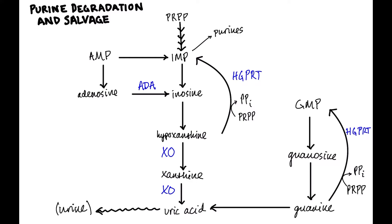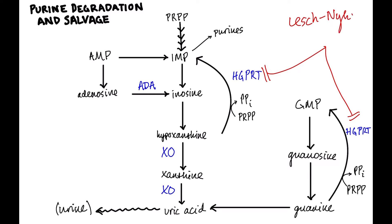Why is the HGPRT enzyme important? It is encoded on the X chromosome and is deficient in a very important disease called Lesch-Nyhan syndrome, which is X-linked recessive, so it occurs in boys. We'll come back to the manifestations of that disease in a bit.